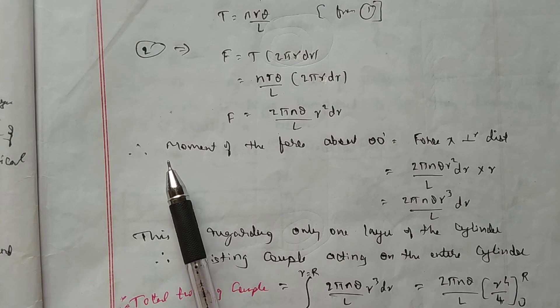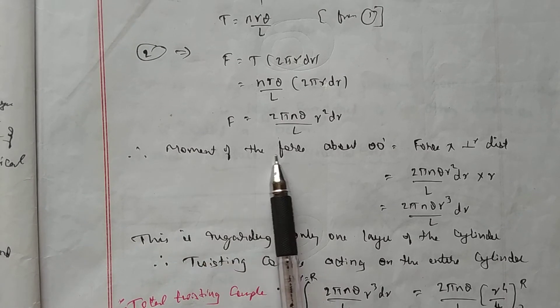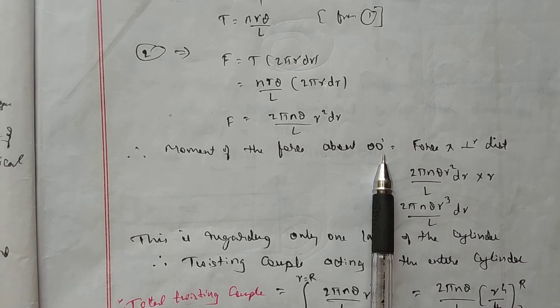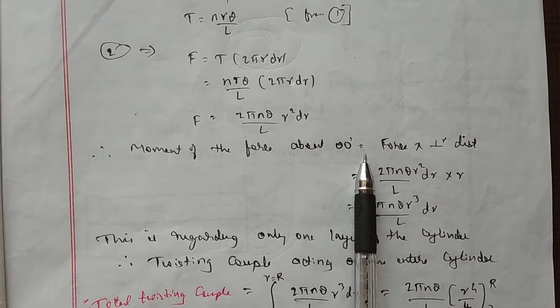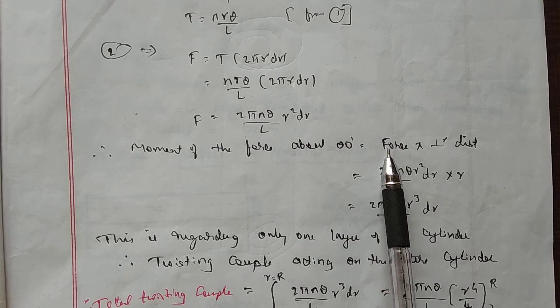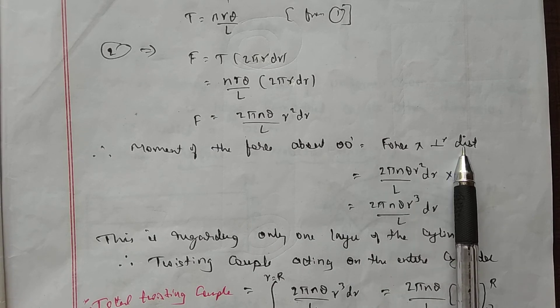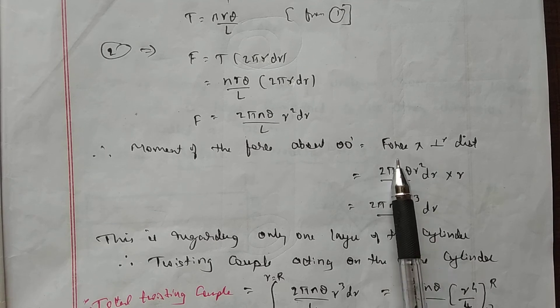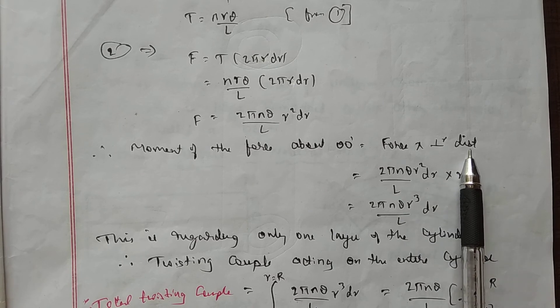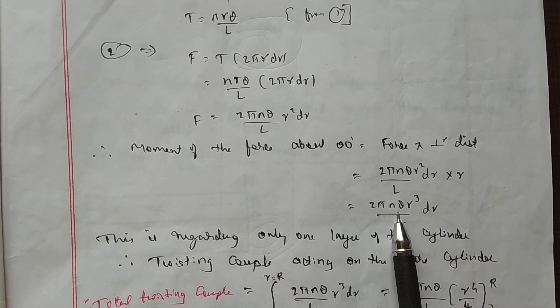Therefore, now the moment of the force about the axis OO dash, the moment of the force with respect to the axis OO dash is given by, as usual, the definition is force into perpendicular distance. Now that force 2 pi N theta r squared dr by L into the distance is R. So it is 2 pi N theta r cube by L into dr.